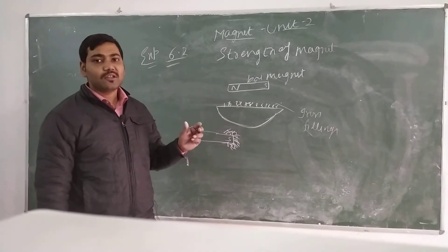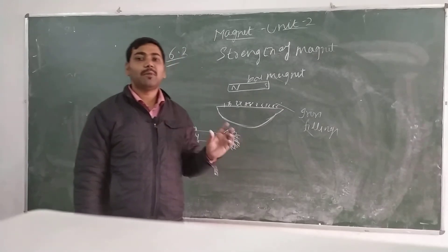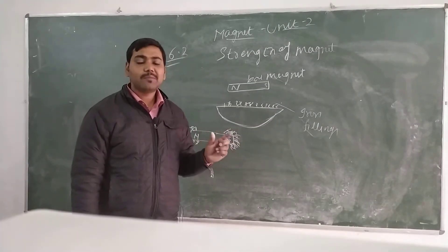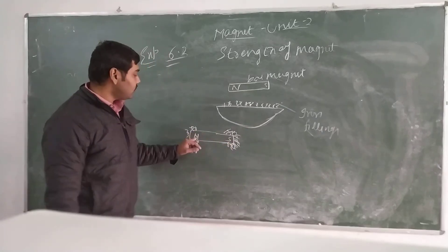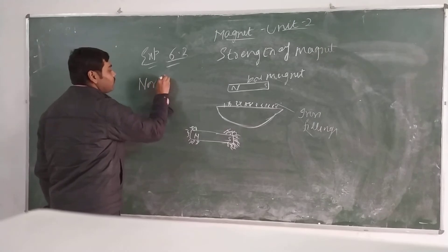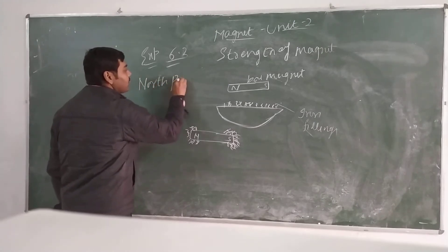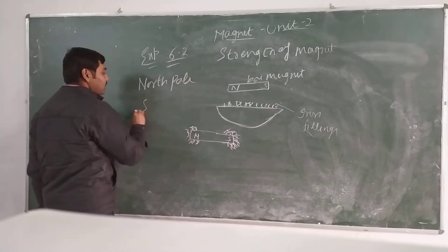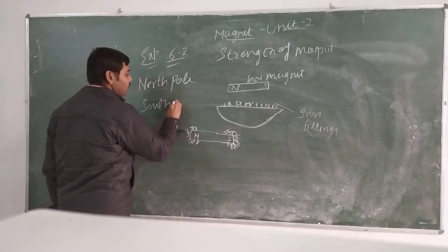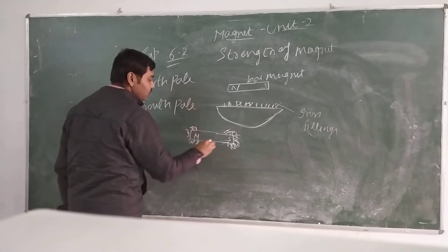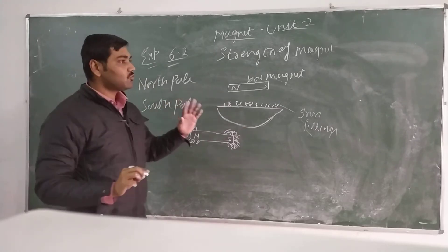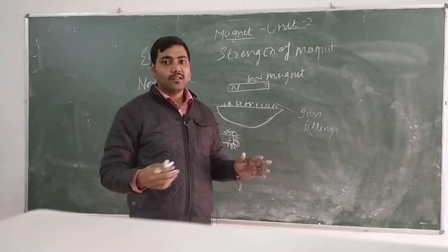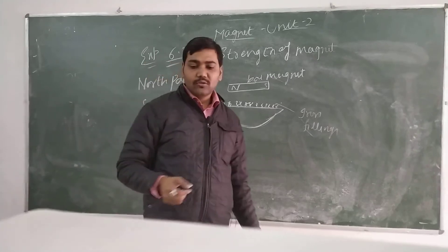This proves that the strength of the magnet is maximum at its ends. The ends of the magnet are known as north pole and south pole — denoted by N and S. These are the north and south poles of the magnet, and this is Investigation 6.2.